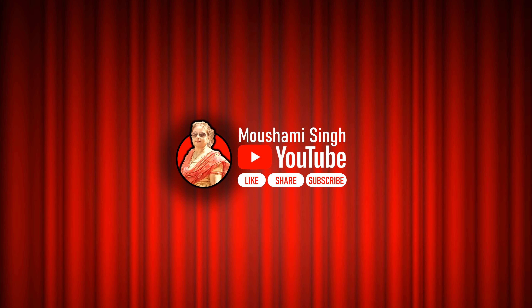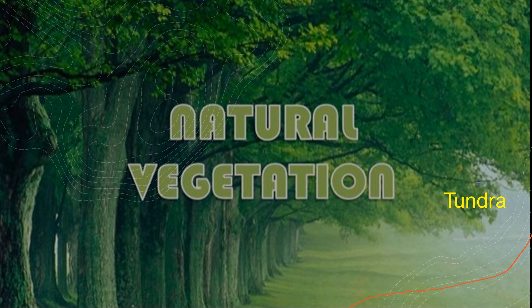Good morning students, I hope all of you are keeping well, so let us begin. Today we are going to learn about the climate and vegetation zones of Asia. In today's module, I am going to focus on the tundra, the taiga, the steppe and the desert type of vegetation. But before we learn about vegetation, let us learn how climate affects the vegetation of the earth.